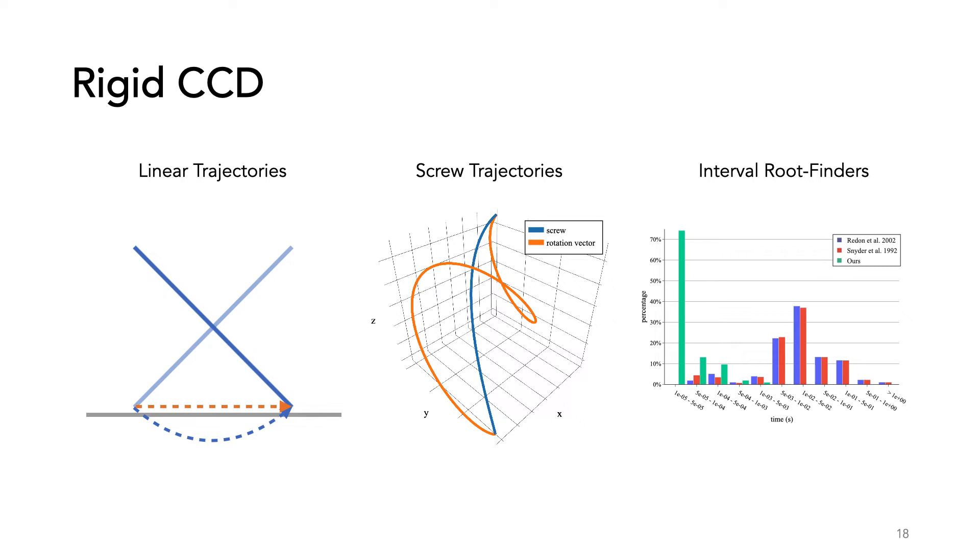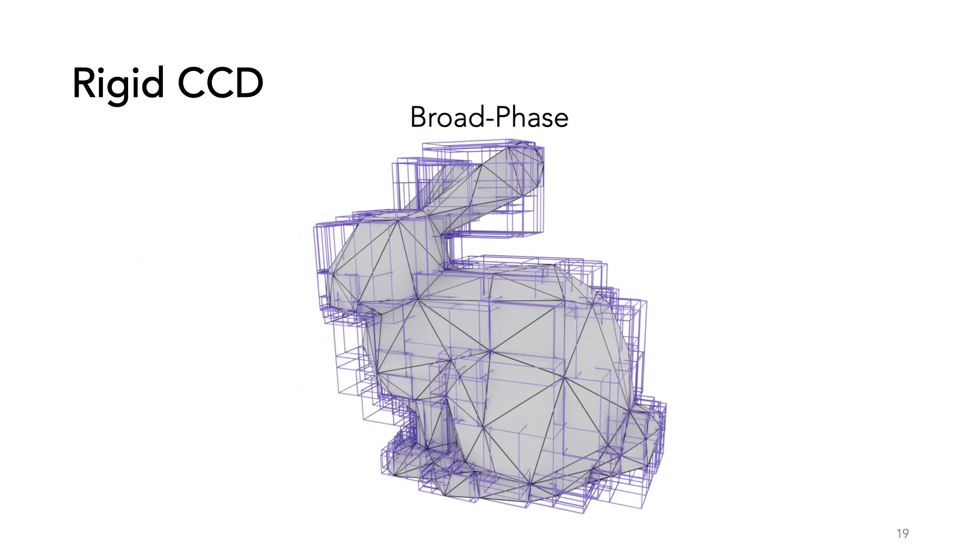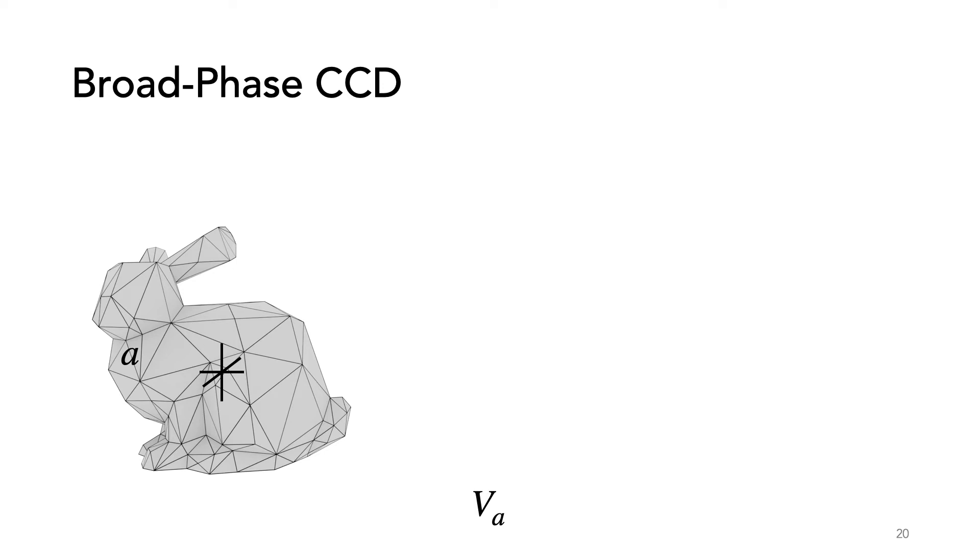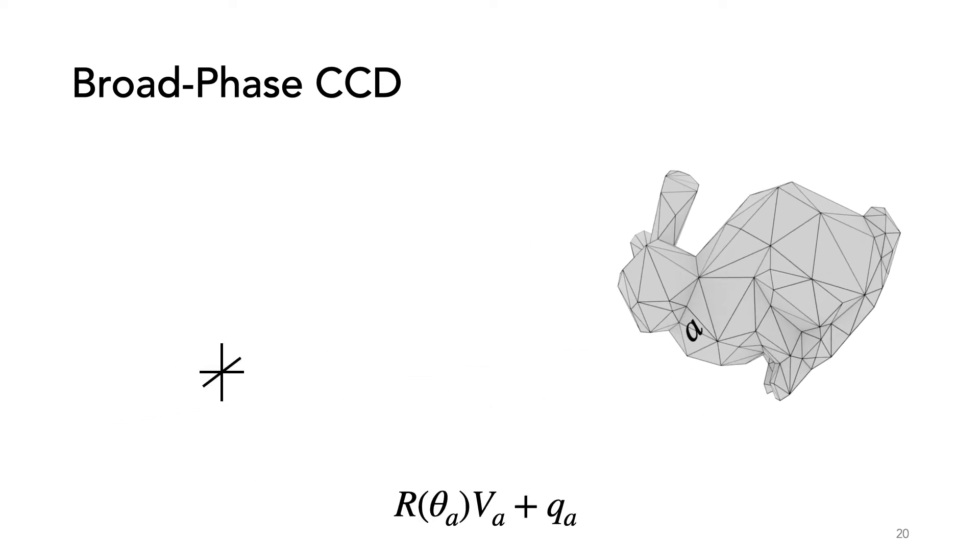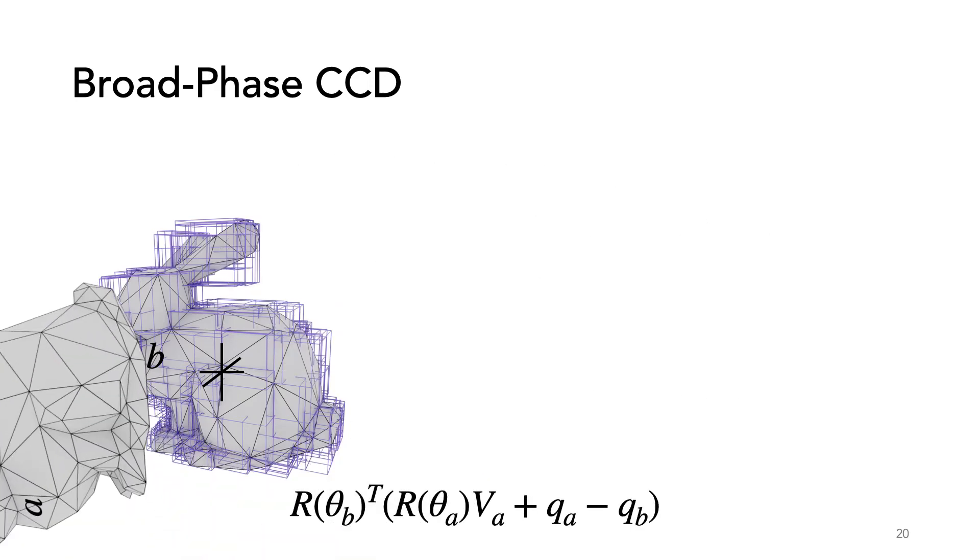Instead, we propose a new method for CCD of curved trajectories. As usual, we divide our method into a broad phase where we look for collision candidates and a narrow phase where we check candidates and compute a conservative bound on the time of impact. To detect collisions, we can take a rigid body, rotate it, and translate it into its global position. And then, given a second rigid body with a statically built BVH, we can translate and rotate our first body into the local space of our second body. Then we can do standard BVH queries to find collision candidates.